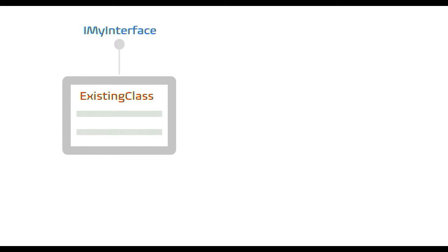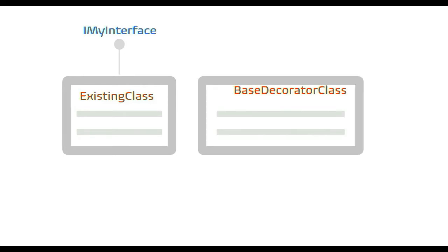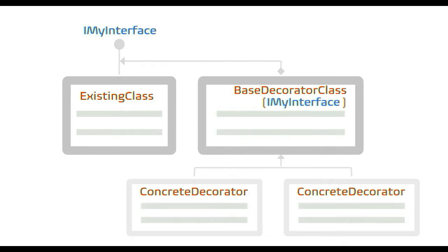So what did we just see in the definition? We have an existing class that implements an interface, say IMyInterface. Now we want to add new functionality to this class. So we create a base decorator class and implement the same interface IMyInterface. Since we want to add new functionality to the existing class without impacting the client, the base decorator class injects the object implementing the same interface and hence acts as a wrapper to the existing class. Let's discuss a real-world scenario where this pattern can be used.